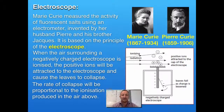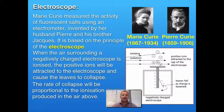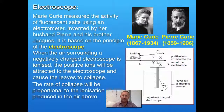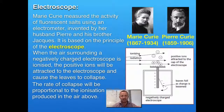The electroscope was used by the Curies. Marie Curie looked at fluorescent salts and used the concept of ionizing radiation. They took an electroscope and charged up the foil. In the diagram in the bottom right hand corner, you can see the foil is negatively charged and as a result repels from the main shaft. She then passed ionizing radiation, and what the ionizing radiation did was ionize the air.